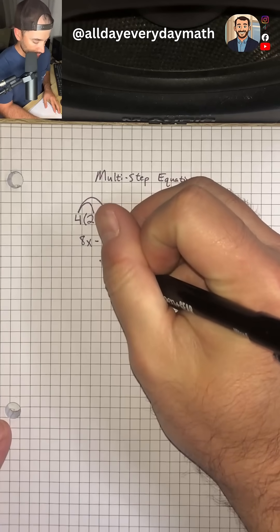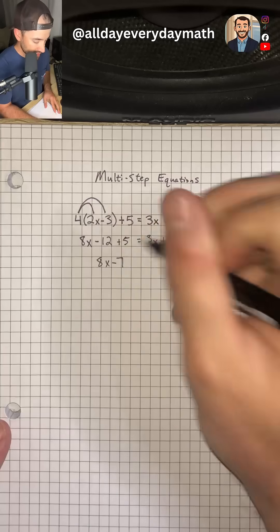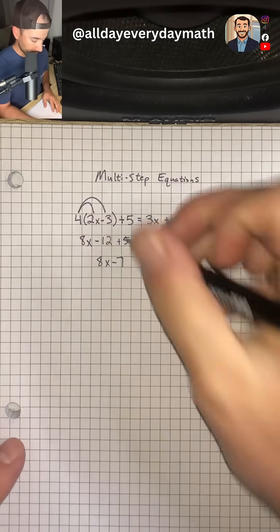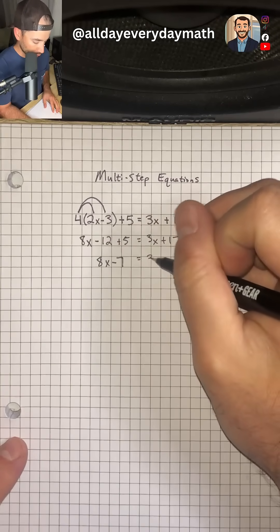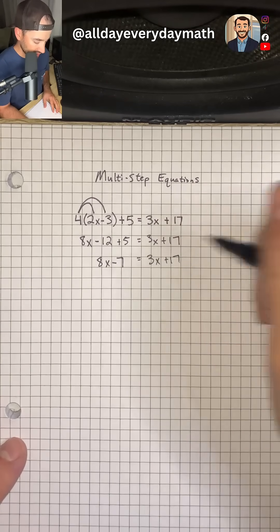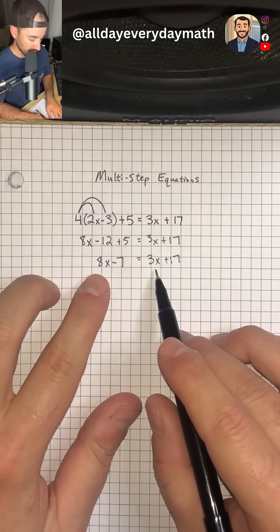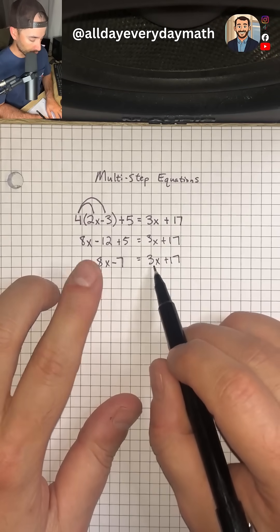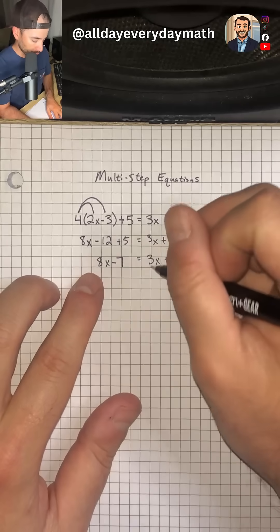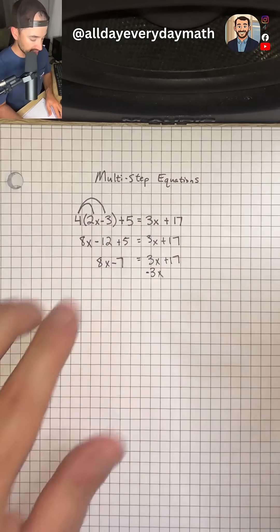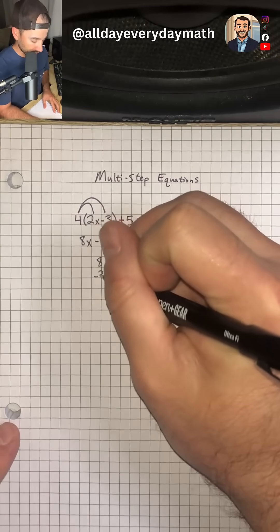So I'm going to rewrite 8x minus 7, because we just combined those, is equal to 3x plus 17. And so now we have an equation with variables on both sides. So I'm going to cancel out one of these variables. I'm going to cancel out the 3x by subtracting 3x from both sides.